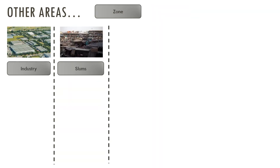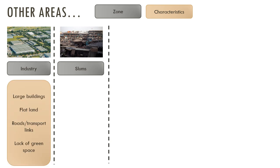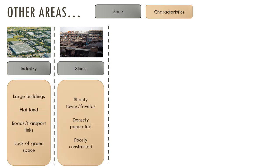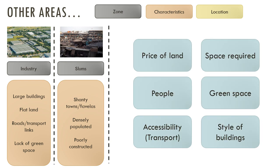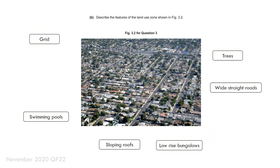Other common zones include industry and slums, which you tend to find in low- and middle-income countries, and sometimes in wealthier countries too. When looking at reasons for why different zones are located where they are, consider the price of land, the space required for that land use, the number of people needed, demand for green space, the importance of accessibility and transport, and the style of buildings.